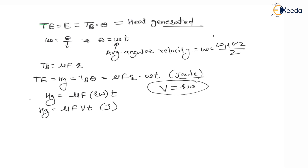If I want to find heat generated per unit time, divide by t: heat generated per unit time = mu·F·V, which is in Joules per second (Watts).